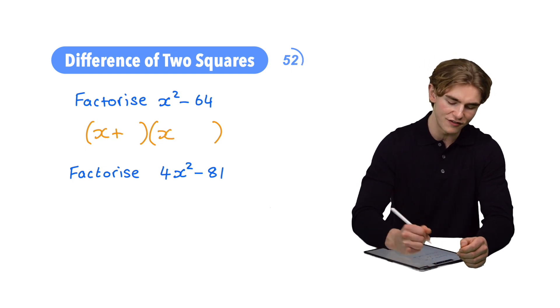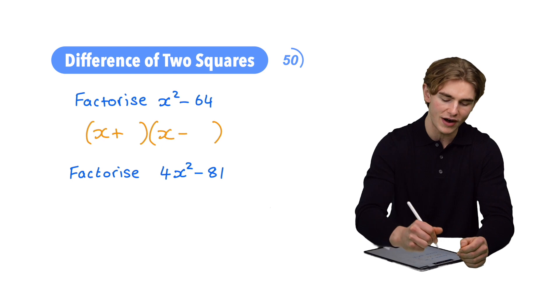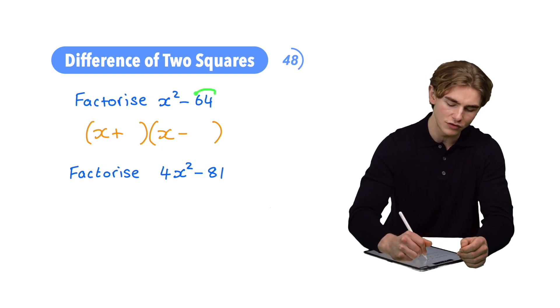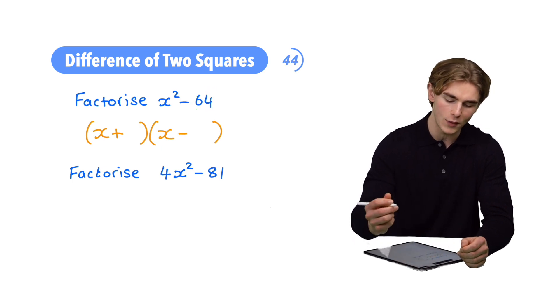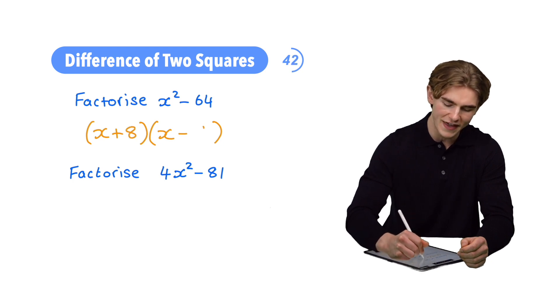Then we're going to write a plus in the first bracket and a minus in the second bracket, and then we're going to have the square root of the second term in our expression. In this case, the square root of 64 is going to be 8.